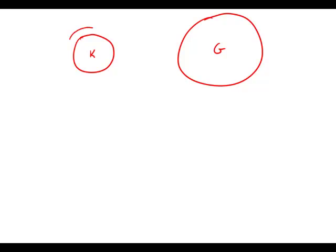The edging is the distance around the circle. In geometry, that distance around the circle is known as the circumference. And so what we're told here really is that the circumference of K is one-half the circumference of G. Circumference, of course, is just 2πR.